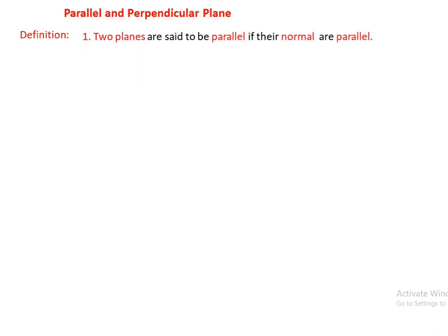Two planes are said to be parallel if their normal vectors are parallel. Two planes are said to be perpendicular if their normal vectors are perpendicular — that means the plane is perpendicular to the normal vector, otherwise the plane is orthogonal.